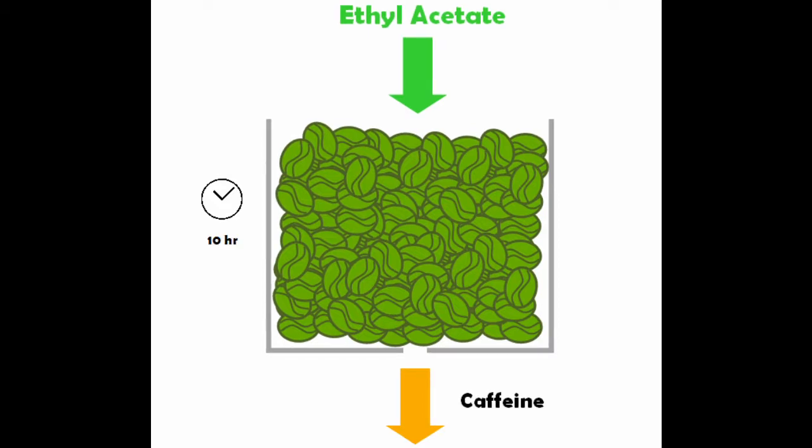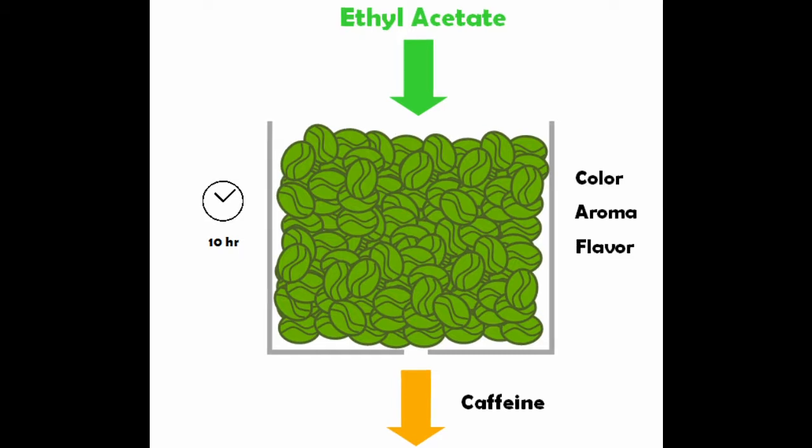Ethyl acetate is a selective solvent, which means it removes only one compound, in this case the caffeine, and leaves behind all the other molecules responsible for color, aroma, and flavor.